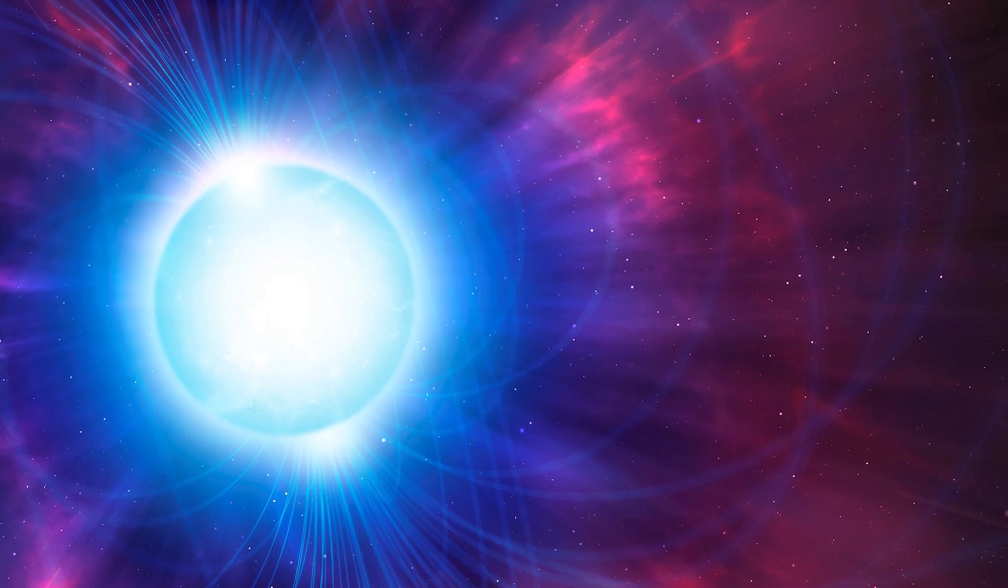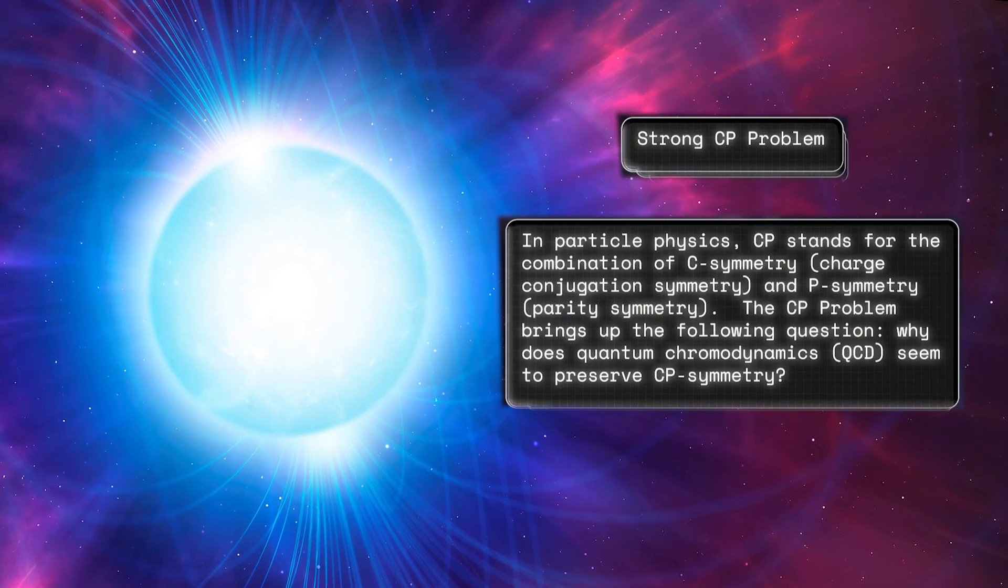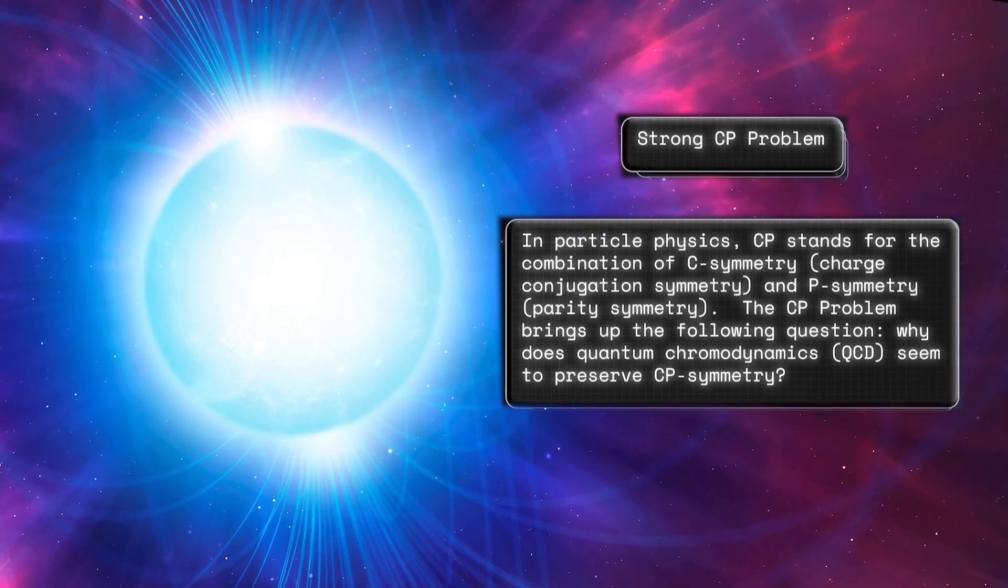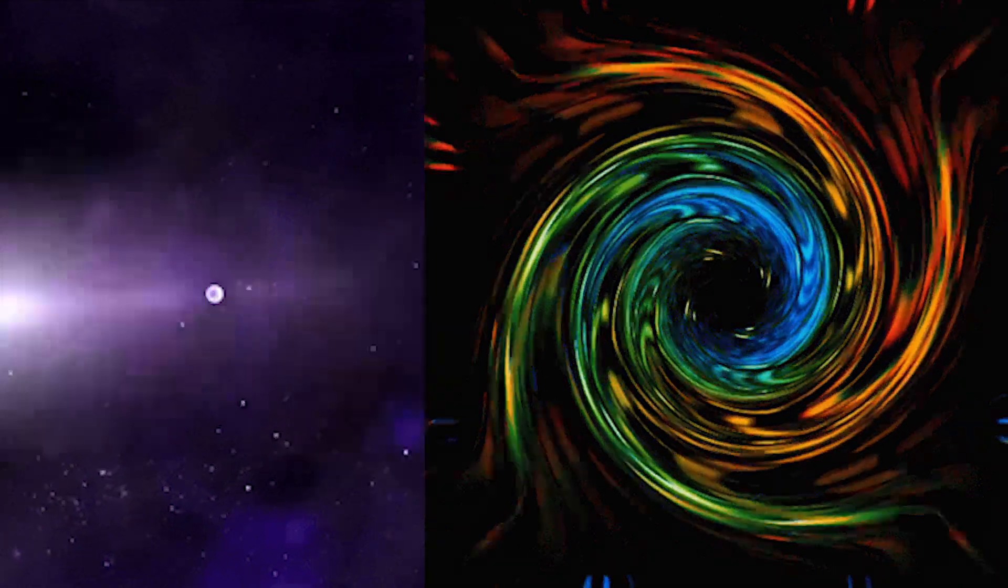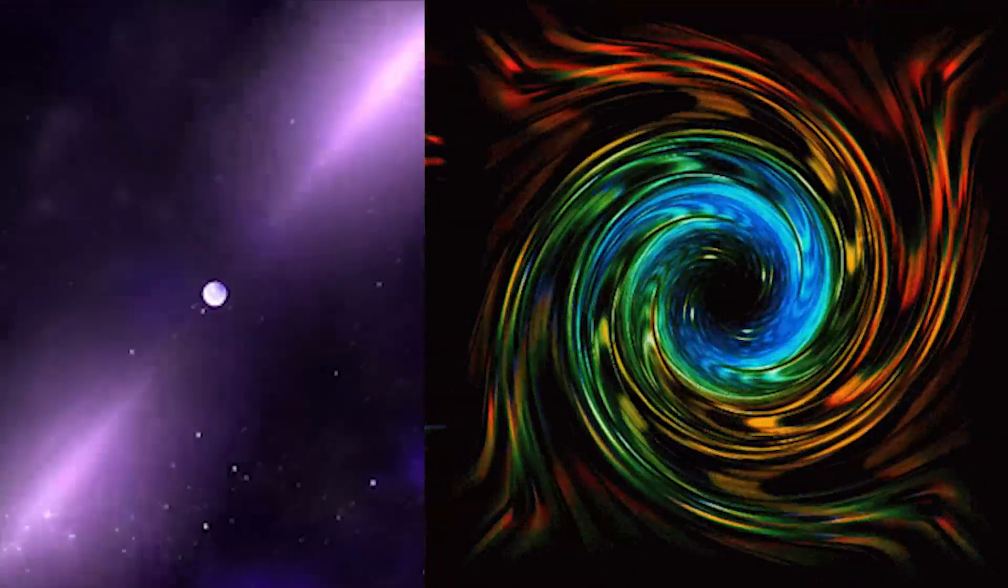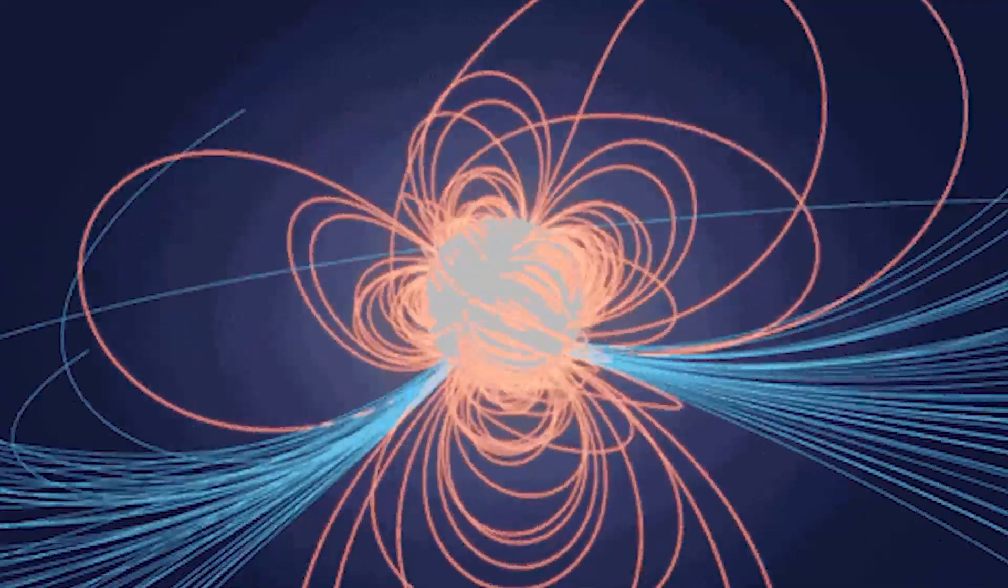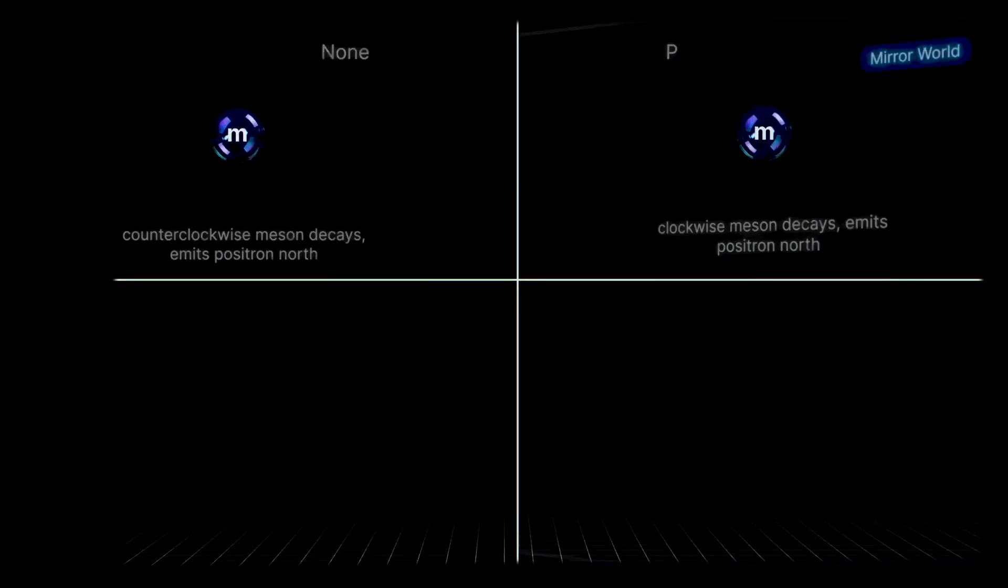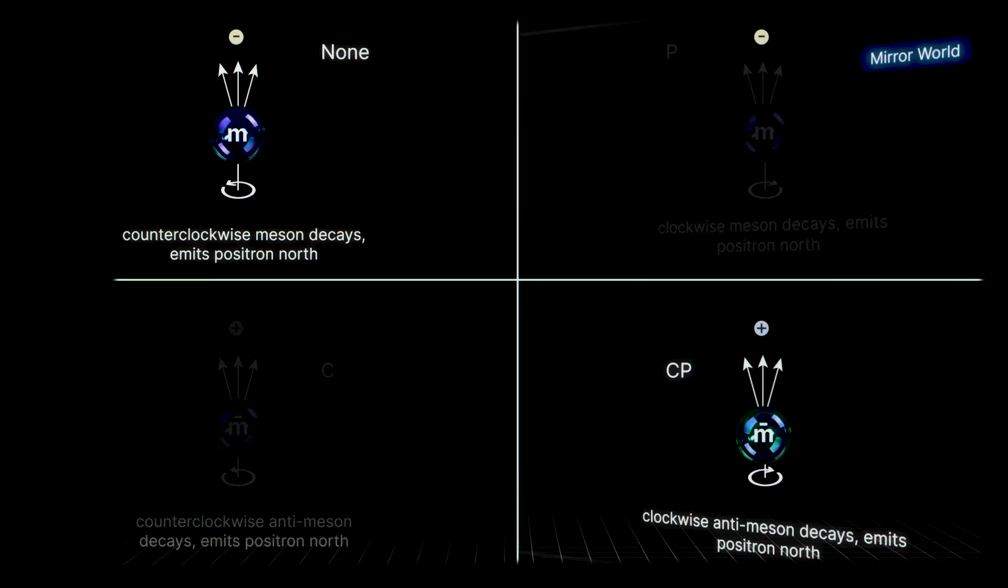One of those holes is the so-called strong CP problem. It's been called one of the most underrated puzzles in all of physics, probably because it's such an abstract problem that it's really hard to describe in non-math terms. We gave it a shot in this video, but the long story short is that the strong force is expected to violate charge parity symmetry.